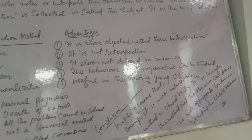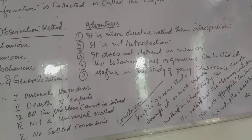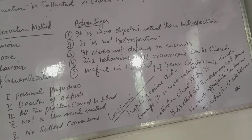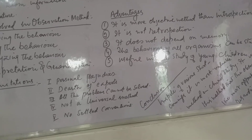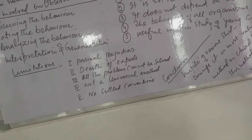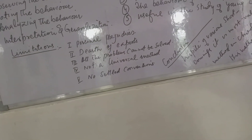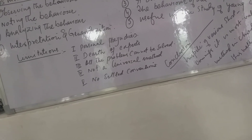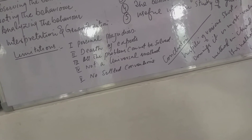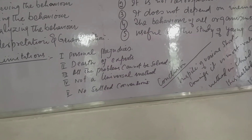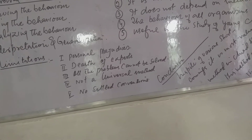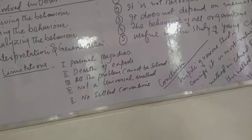Like others, this method also has some limitations or shortcomings. Now, what are the limitations of this method? Number one: personal prejudices. Personal prejudice comes in the way of observation. While observing a child, the observer may hide his feelings regarding the particular case. All human beings have their own weaknesses, and that may reflect in the observation. Number two: dearth of experts. The observer who is going to observe the child must be well experienced, qualified, and trained. As such, it is very difficult to find such experienced, qualified, and trained persons.